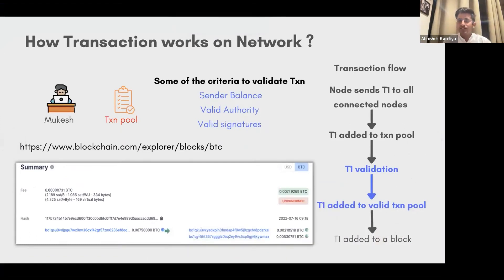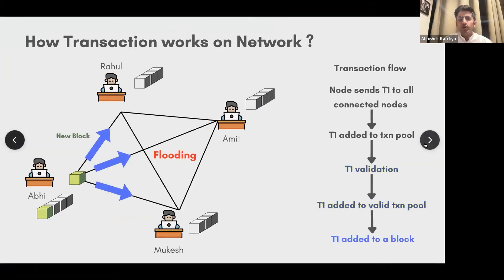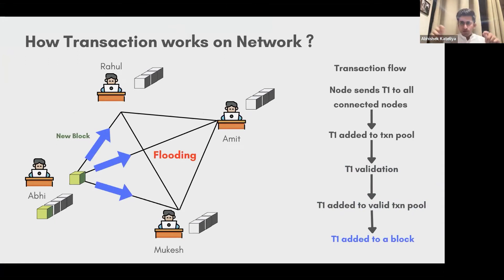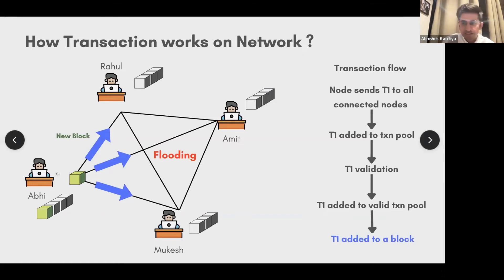Once everybody has validated your transaction — confirmed your balance, verified your signature — your transaction is validated. There are two queues: a waiting list, and then a confirmation list for validated transactions. Once you have say 30 confirmed transactions, you take them, put them into a block, and send that block to everyone on the blockchain — because every peer needs to have the same set of data.